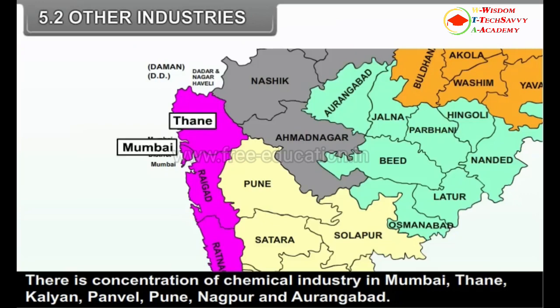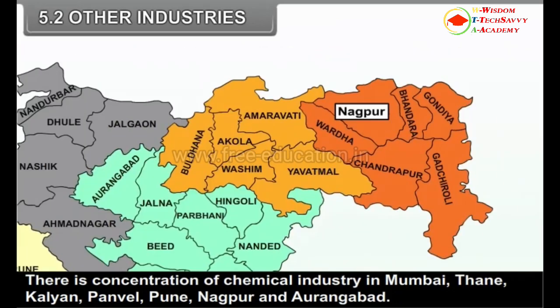There is a concentration of chemical industry in Mumbai, Thane, Kalyan, Panvel, Pune, Nagpur and Aurangabad.